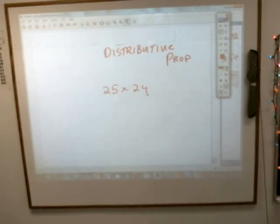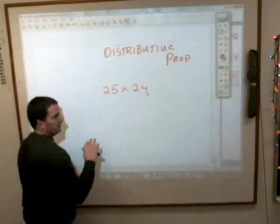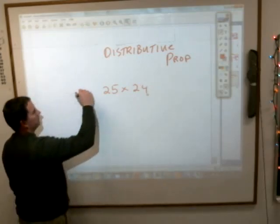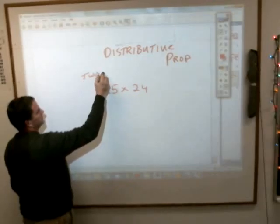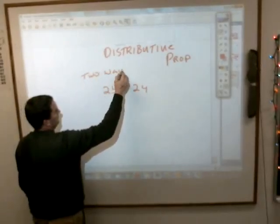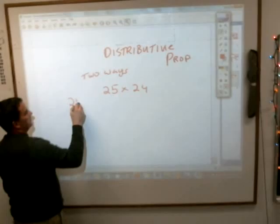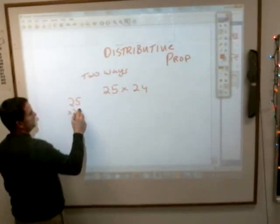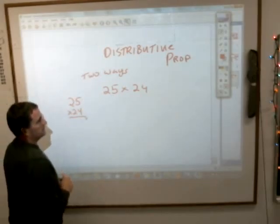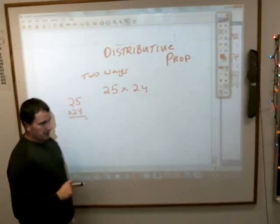Give me a chance to get a picture. Write that down there, distributive property. Okay, first of all, one way is the way that we just did. The two ways to do this, one way is just to multiply 25 times 24, that's our double digit thing. But the distributive property says this.